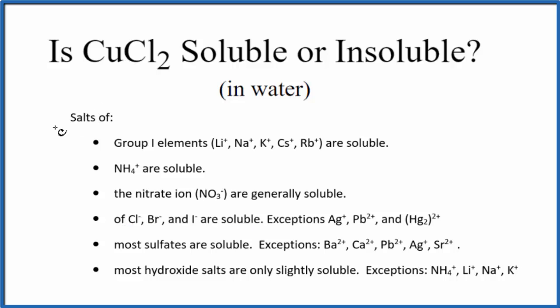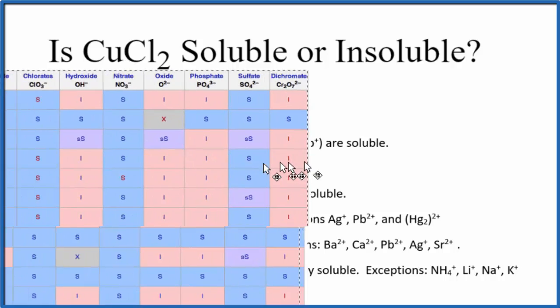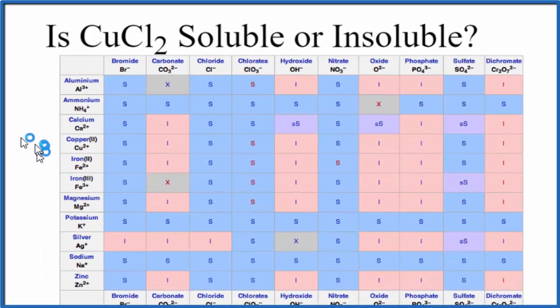We can also look at a solubility chart. Here's a solubility chart. The positive ions are on the left, and on the top, we have the anions, the negative ions.